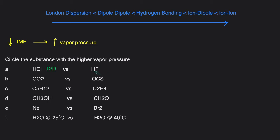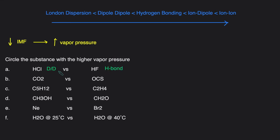HF will have hydrogen bonding because whenever you have H-F, H-O, or H-N, that's hydrogen bonding. Dipole-dipole is weaker than hydrogen bonding, so since HCl has the weaker intermolecular force, it will have the higher vapor pressure.